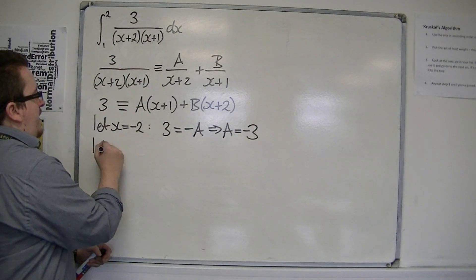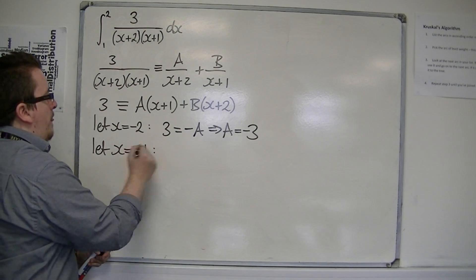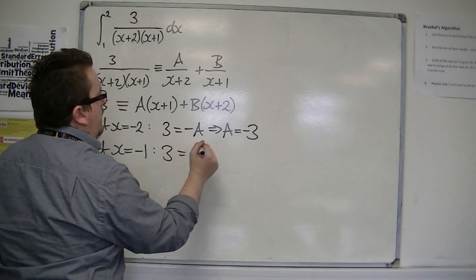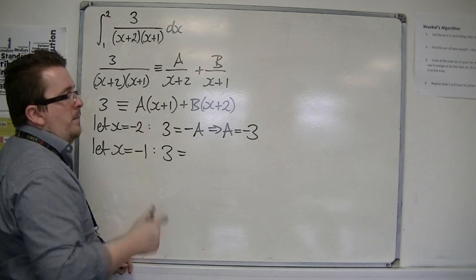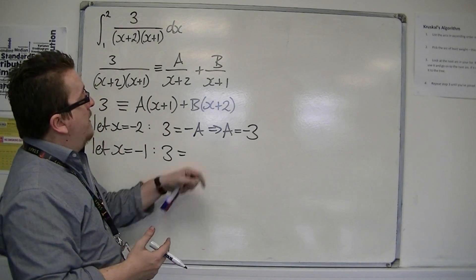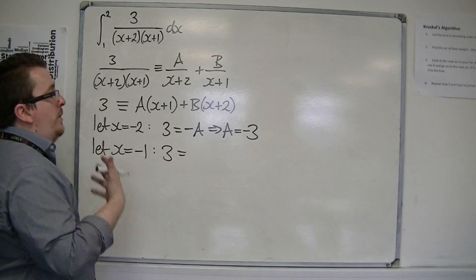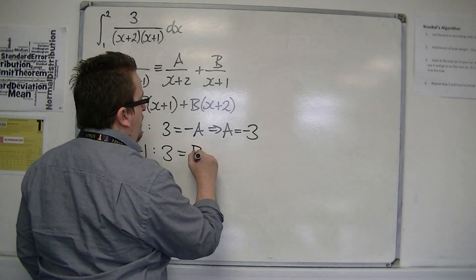And if I let x be -1, then I've got 3 equals, well, that -1 cancels out that bracket. I've got -1+2 is 1, so that means that B is 3.